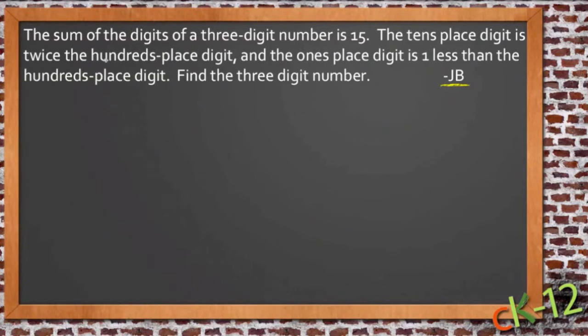He said he needed a little help trying to find the three-digit number that he was asked about. The information he was given said that the sum of the digits of the three-digit number is 15. The tens place digit is twice the hundreds place digit, and the ones place digit is one less than the hundreds place digit. And he's supposed to find that three-digit number.